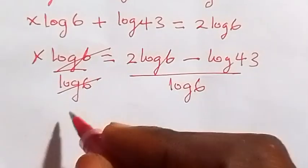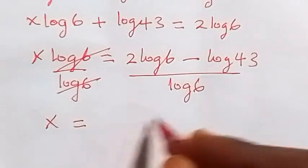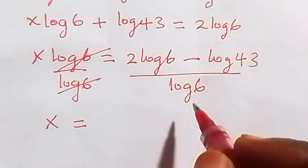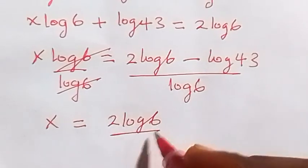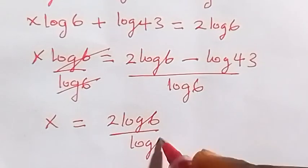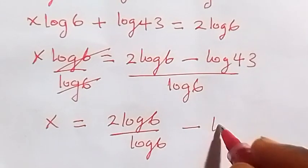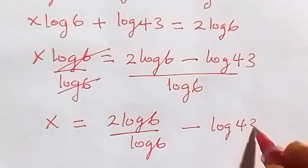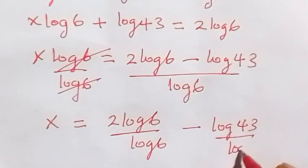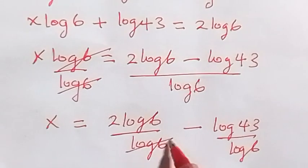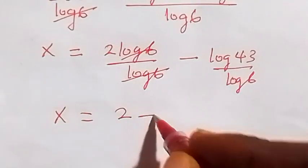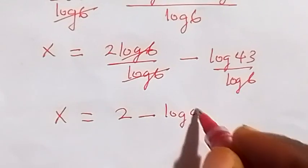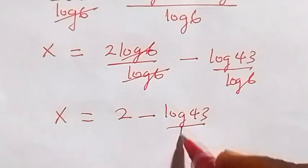So we are left with x, which equals to, when we separate this: 2 log 6 divided by log 6, then minus log 43 divided by log 6. Log 6 cancels log 6 here, then what we have will become x equals to 2 minus log 43 over log 6.